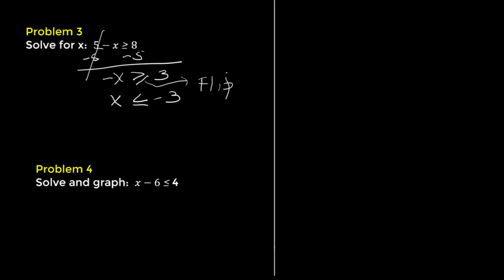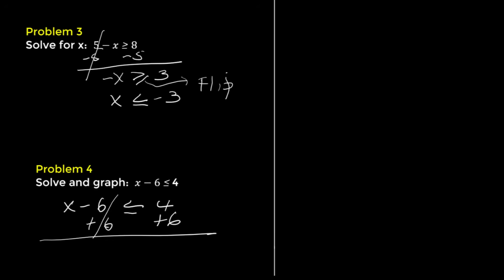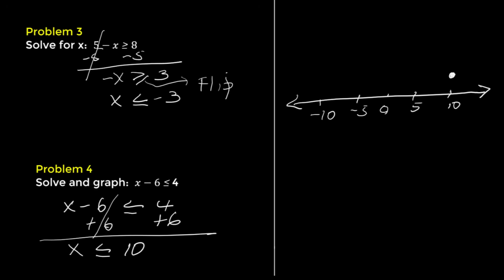Problem 4. Solve and graph: x minus 6 is less than or equal to 4. Add 6 to both sides, giving x is less than or equal to 10. On a number line, put a closed circle at 10 and draw an arrow to the left.